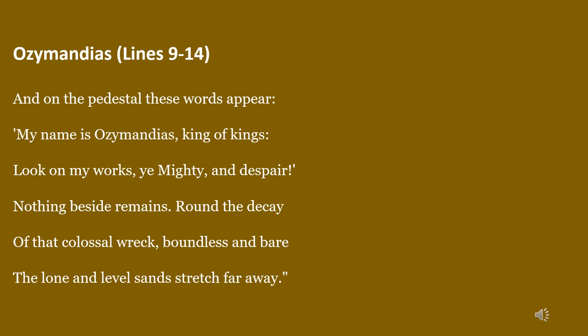'Round the decay' — 'decay' as a noun refers to something destroyed. That broken, shattered statue lying there on the ground — around that statue. 'Of that colossal wreck' — 'wreck' means something broken and ruined; 'colossal' means huge. So around the ruins of that huge broken structure lying there on the ground.